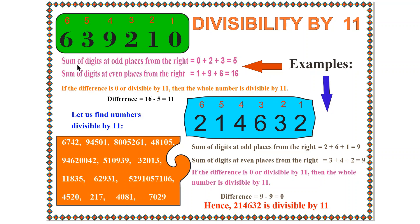Sum of digits at odd places from the right: position 1 is 0, position 3 is 2, position 5 is 3. So 0 plus 2 plus 3 equals 5. Now the sum of digits at even places from the right: position 2 is 1, position 4 is 9, position 6 is 6. So 1 plus 9 plus 6 equals 16.